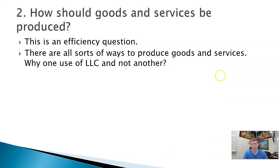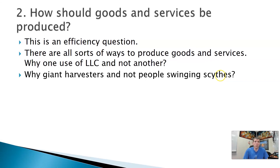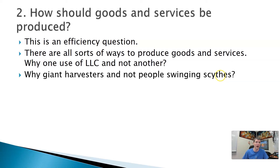The second question — how should goods and services be produced — is a question about efficiency. If you can make things in lots of different ways, why make it one way instead of another? Why employ our land, labor, capital, and entrepreneurship to make an item in one particular fashion instead of another? An example: if we're harvesting crops, we can have big combines running around harvesting the crop, or we can have a team of 50 guys out there with scythes whacking down the grain and wheat and corn. We could do that, but obviously that seems a lot more inefficient. Instead of 50 guys with scythes, you can have one guy in the combine harvesting all that same crop — much more efficient.